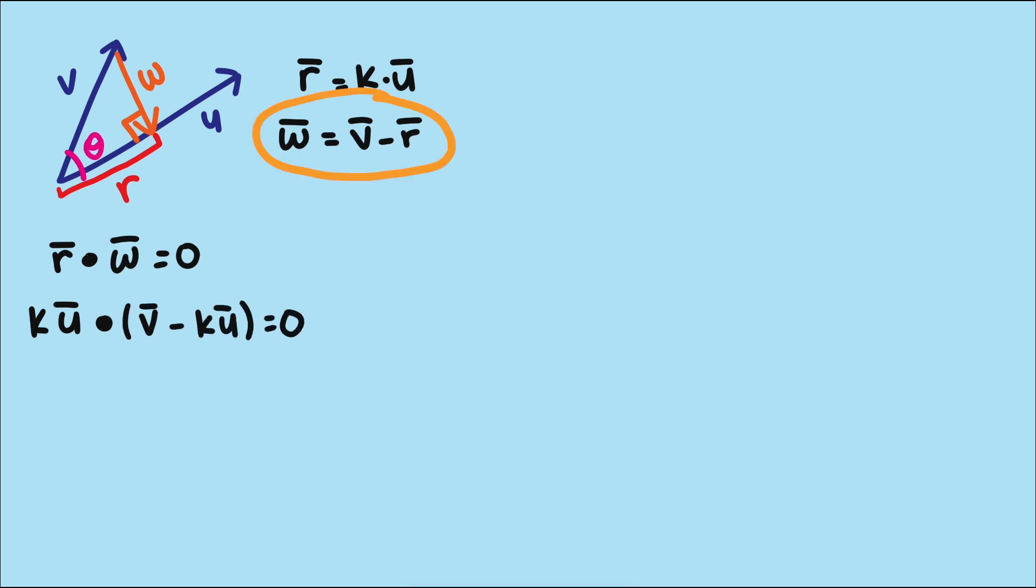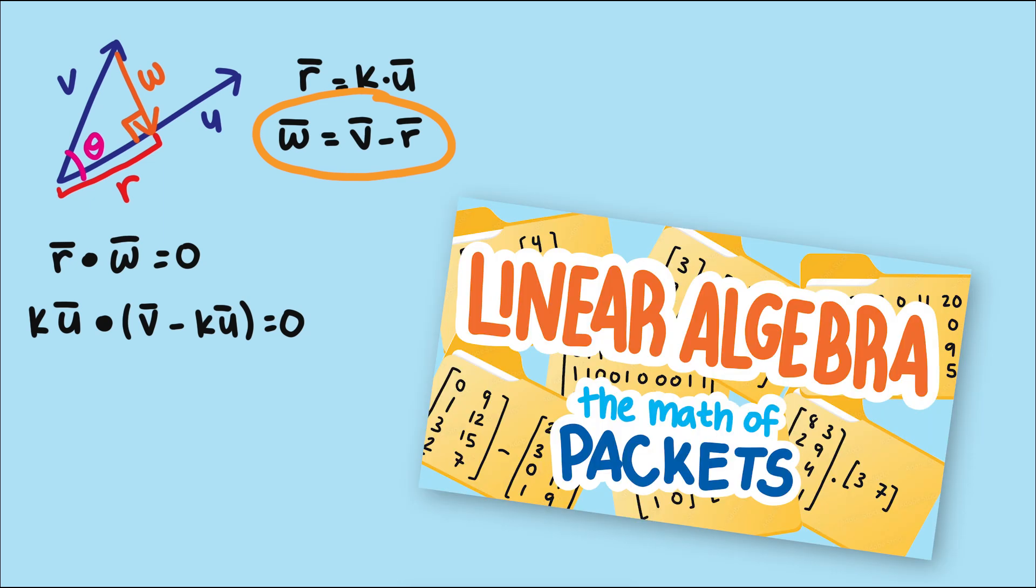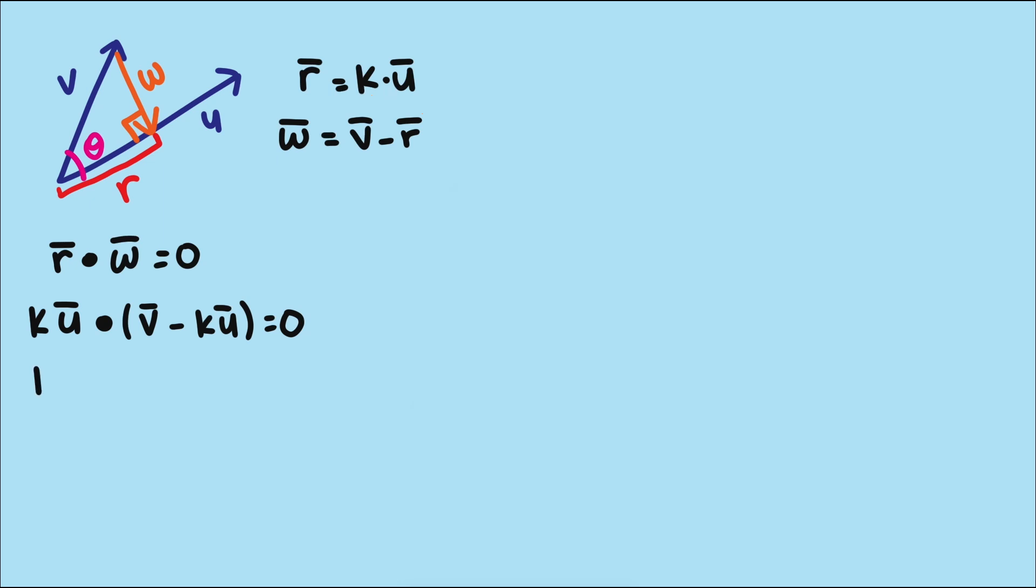We learned this fact about the sum and difference of vectors in part 1 of this series. You can go back and watch it using the link here. So with all these substitutions, we have a really nice equation that we can solve for k and get this. k is u dot v divided by u dot u.